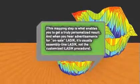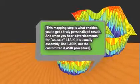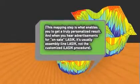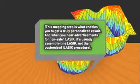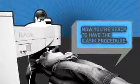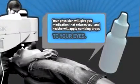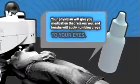And when you hear advertisements for on-sale LASIK, it's usually assembly line LASIK, not the customized iLASIK procedure. Now you're ready to have the iLASIK procedure. Your physician will give you medication that relaxes you and he or she will apply numbing drops to your eyes.